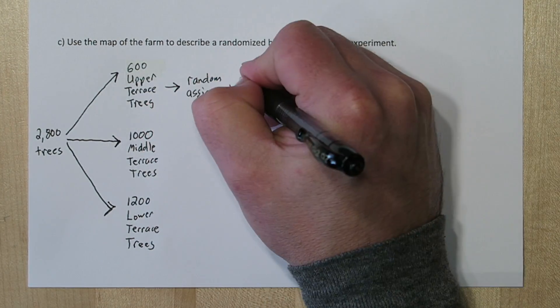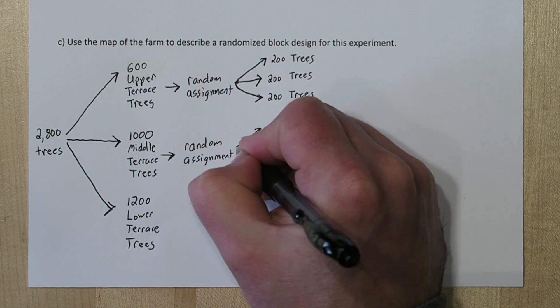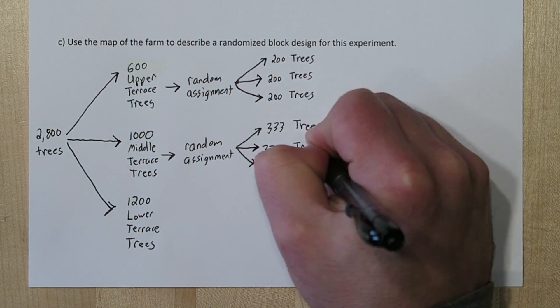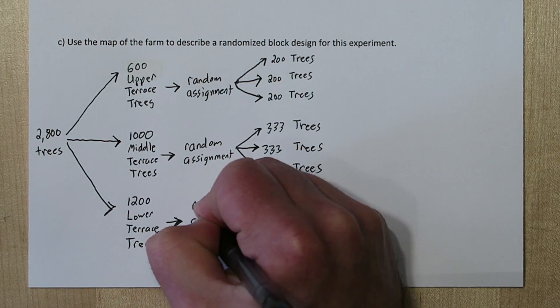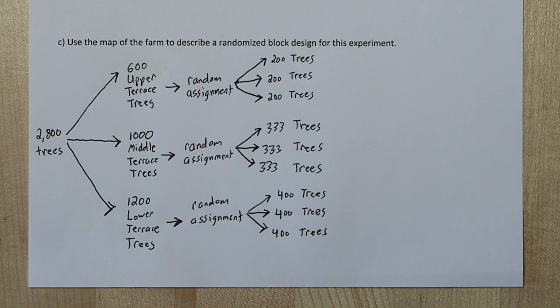Now for each of our blocks, we're going to use random assignment to split the trees into three groups of close to equal sizes if possible. 1000 isn't divisible by three, so one of our groups has an extra tree in it.